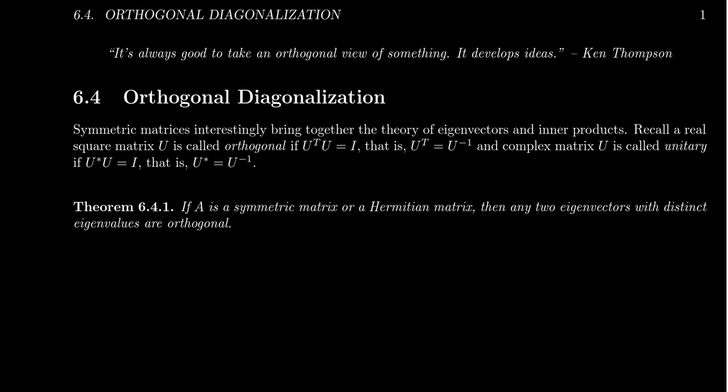We're going to talk a lot about the idea of a symmetric matrix. A symmetric matrix is a real square matrix with the property that A transpose equals A itself — that is, when you take the transpose, it doesn't change the matrix whatsoever.